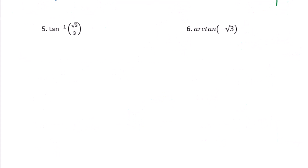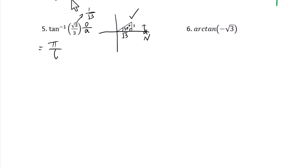Question 5: inverse tangent of square root of 3 over 3. Since this is positive, the answer is in the first quadrant. Change square root of 3 over 3 into 1 over square root of 3, giving side lengths 1 and square root of 3. This angle is 30 degrees, so the answer is pi over 6.